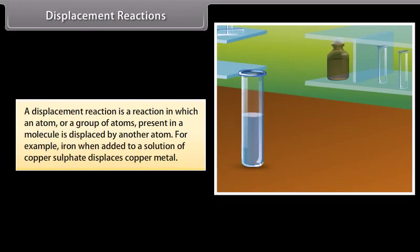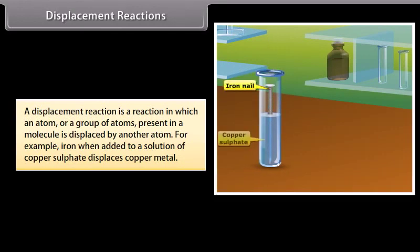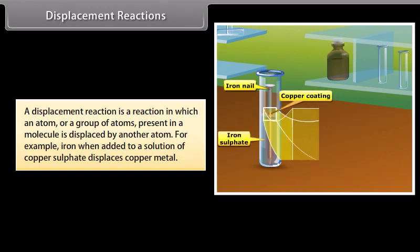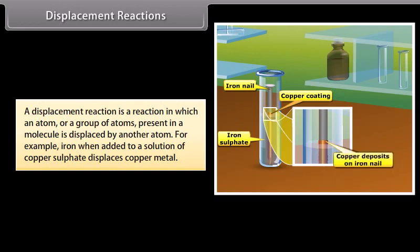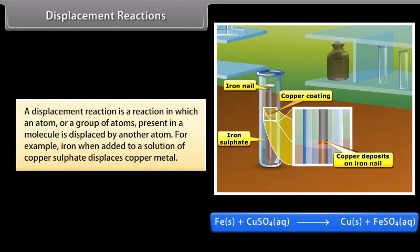A displacement reaction is a reaction in which an atom or a group of atoms present in a molecule is displaced by another atom. For example, iron when added to a solution of copper sulfate displaces copper metal.